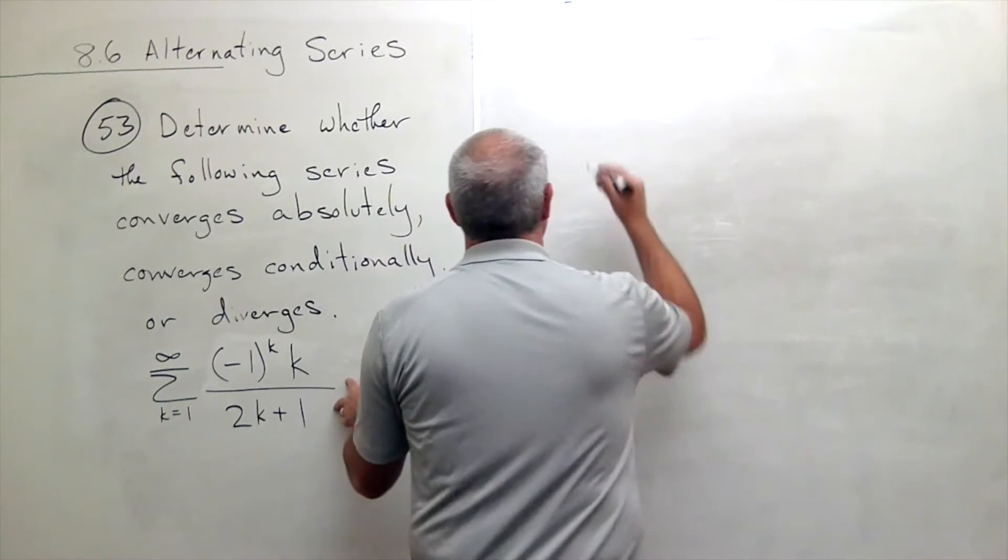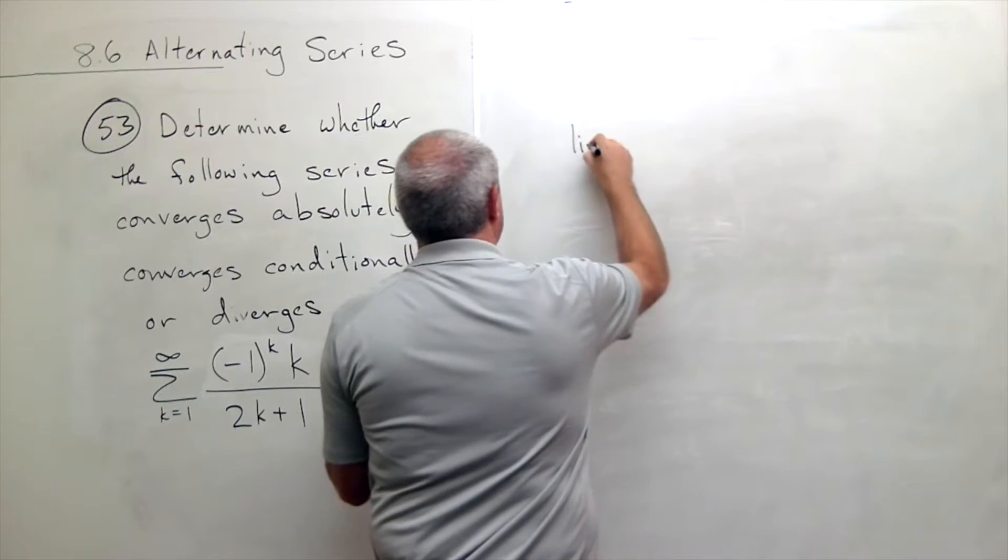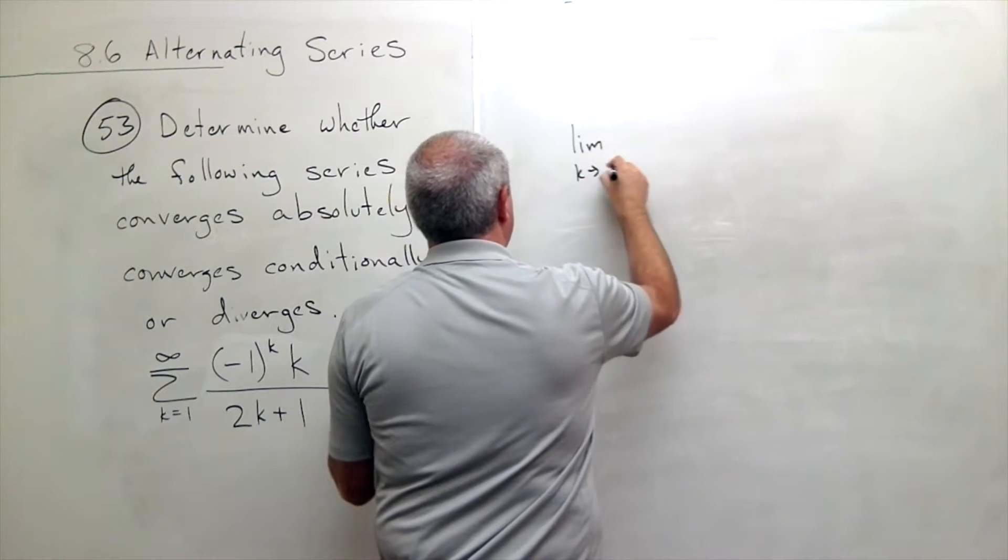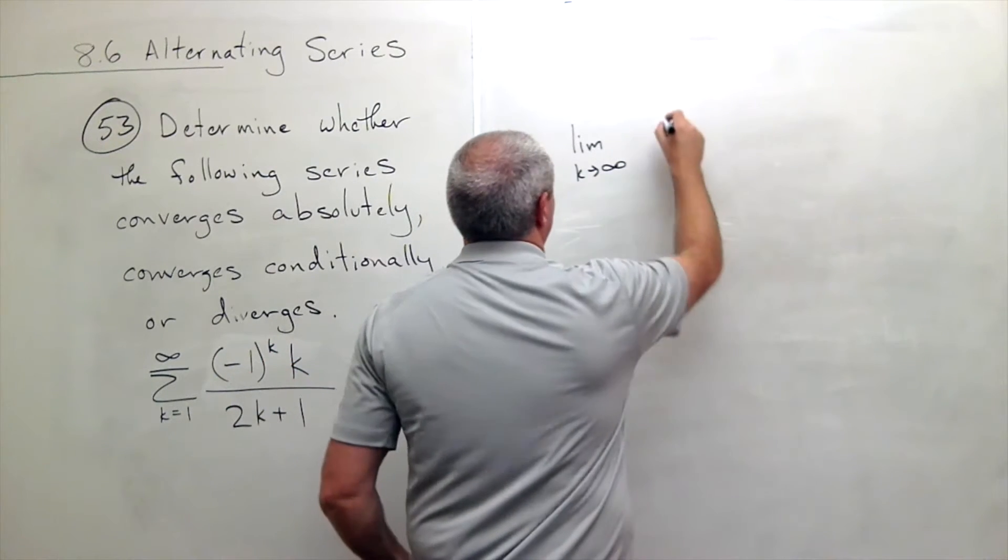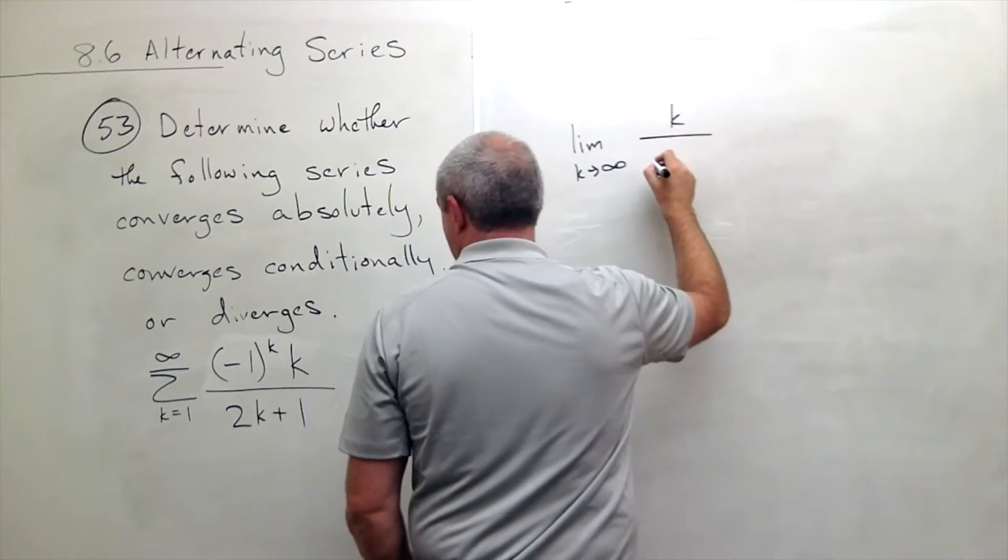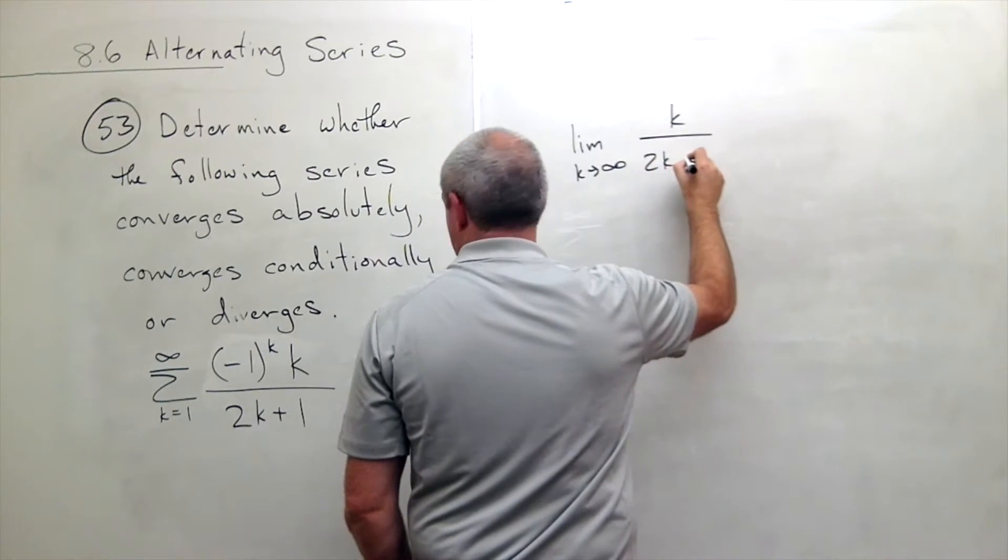Okay, so let's just look at the limit as k goes to infinity of, forget the negative 1 to the k, of k over 2k plus 1.